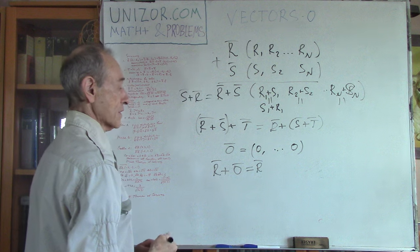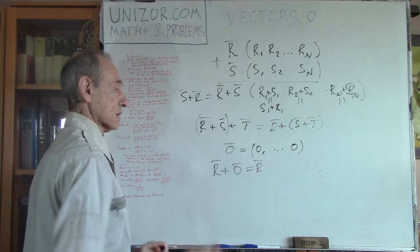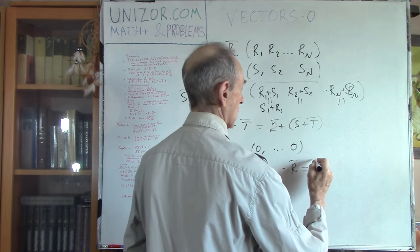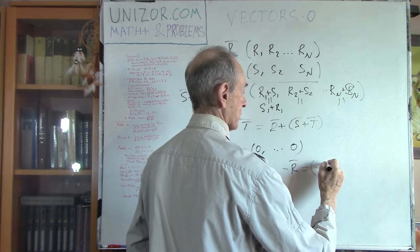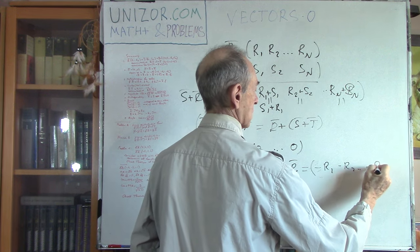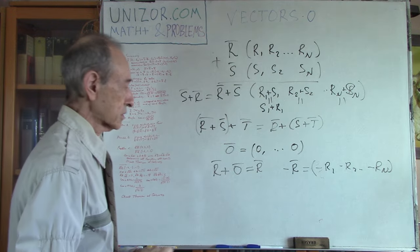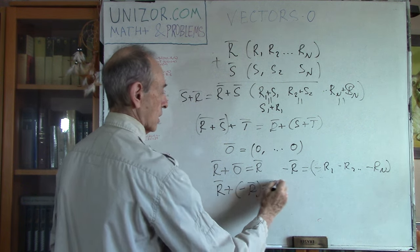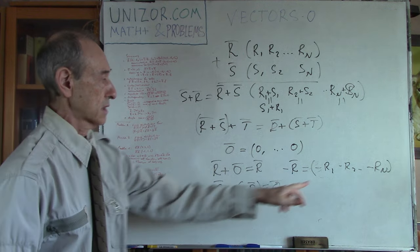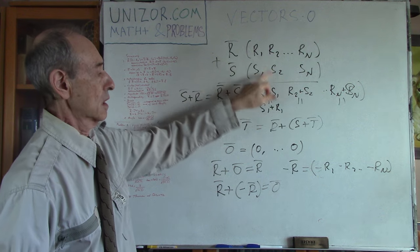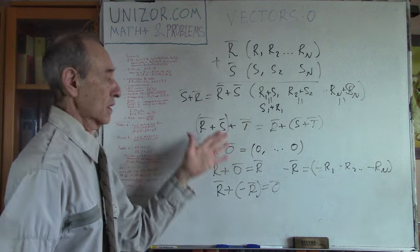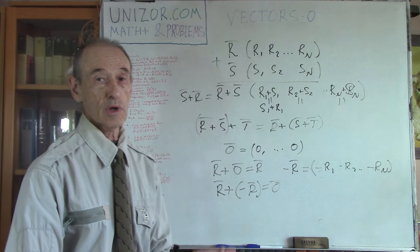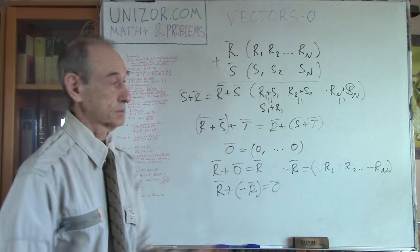Additionally, with every vector r you have something which is opposite to r — we use the minus sign in front of it — which is basically the set of opposite numbers: minus r1, minus r2, ..., minus rn. What's interesting is that r plus minus r equals the null vector, because minus r1 added to r1, minus r2 with r2, etc., gives all zeros. So that completes our explanation of the properties of addition: associative law, commutative law, zero vector, and negative vector.